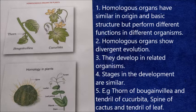Homologous organs are shown by the thorn of Belia and tendril of Cucurbita. In both plants there is modification of stem, so they are similar in origin. Again, it is shown by the spine of cactus and tendril of pea, where both spine and tendril are modifications of the leaf. So in these cases they have similar origin but their functions are different.